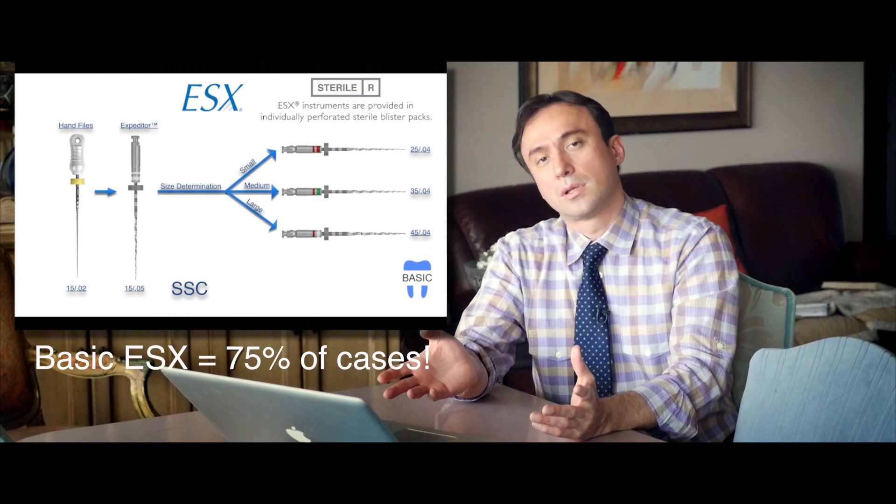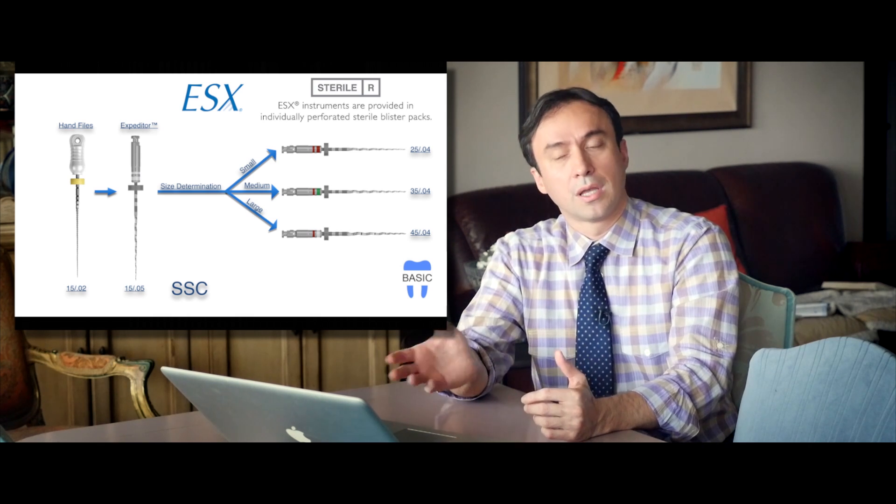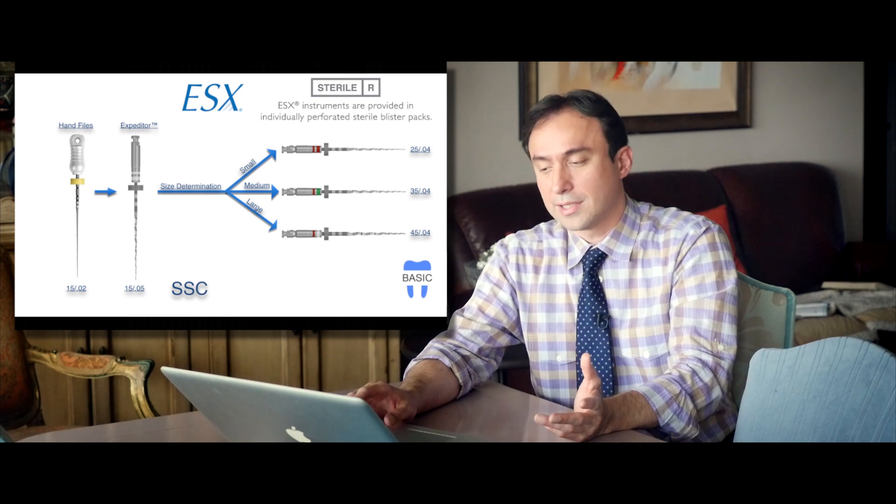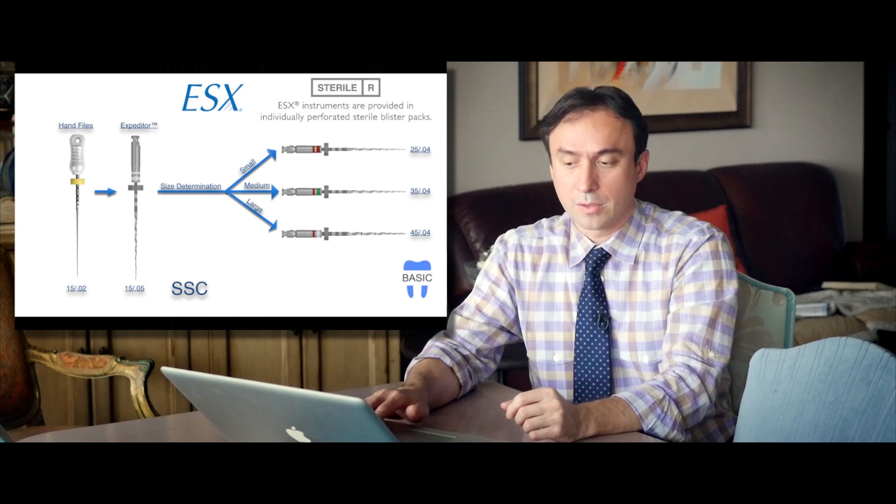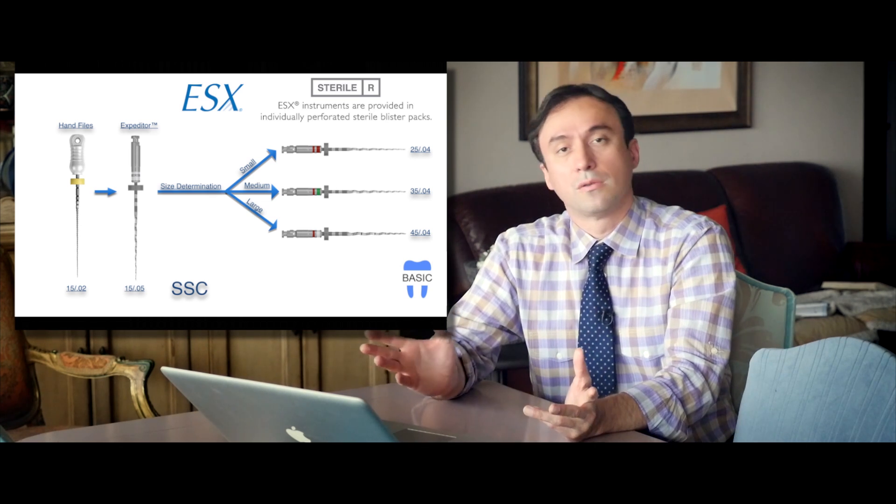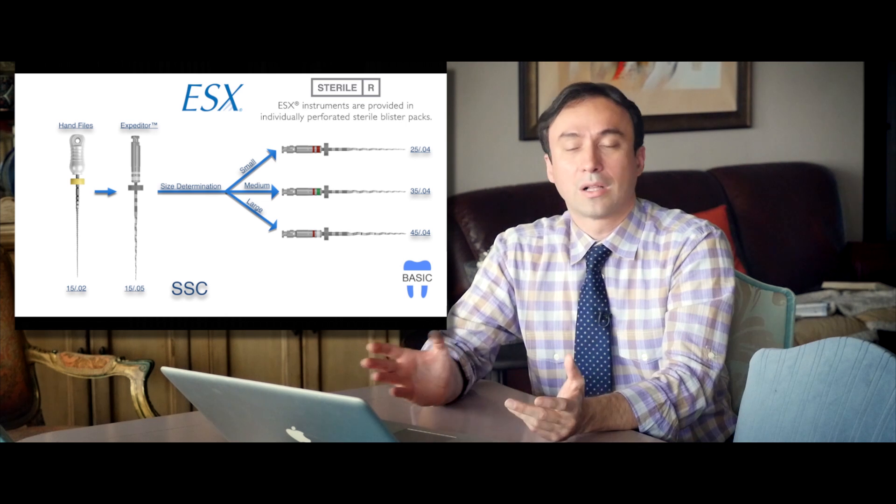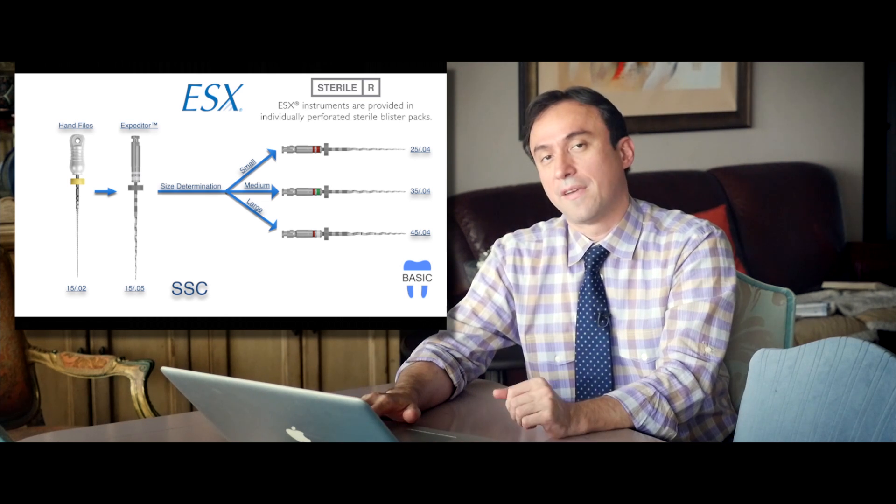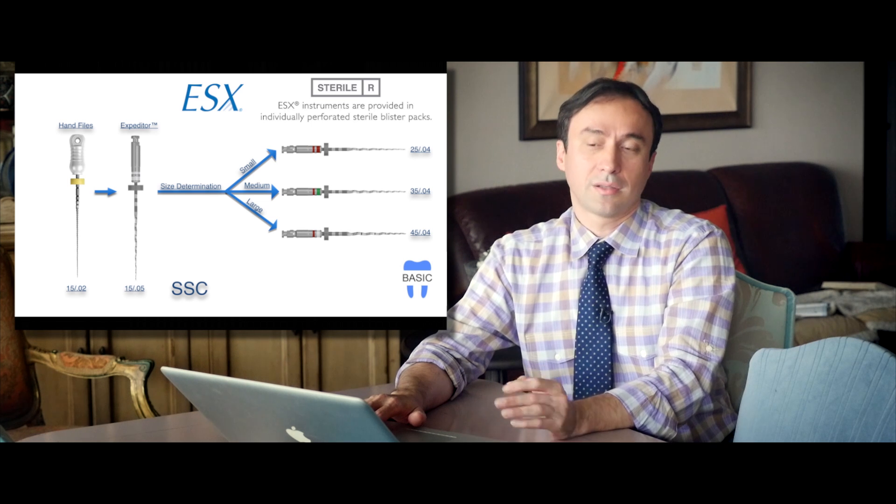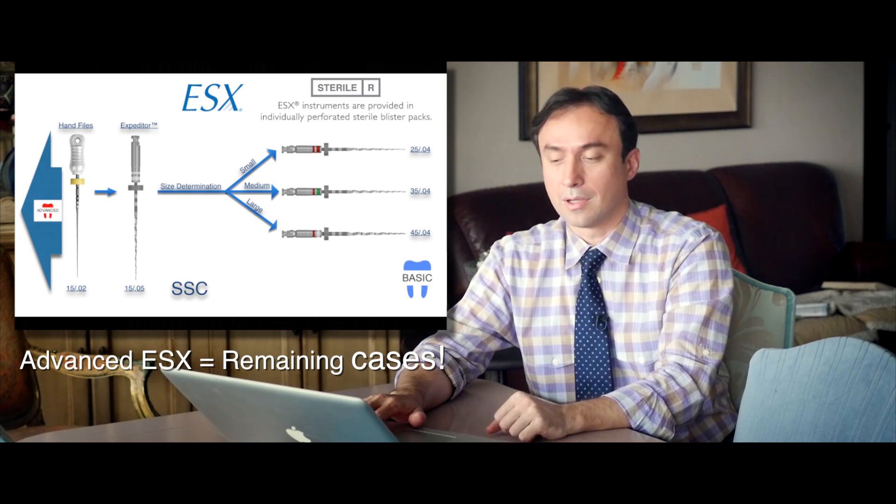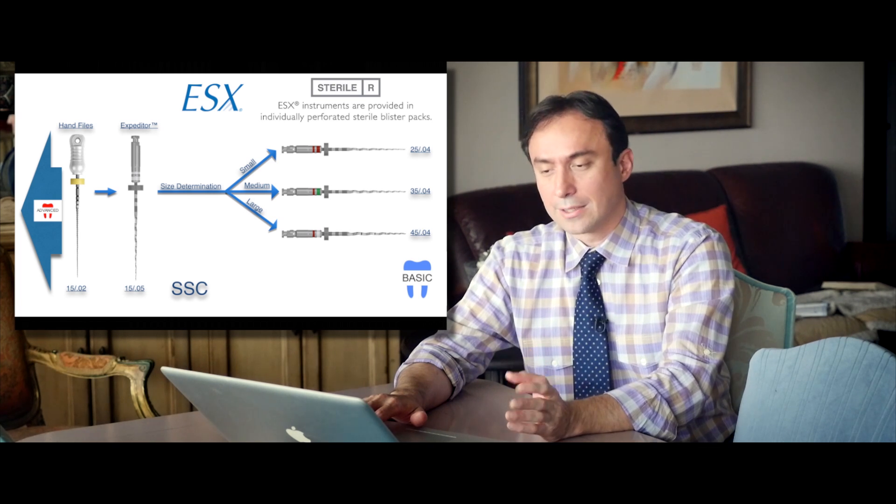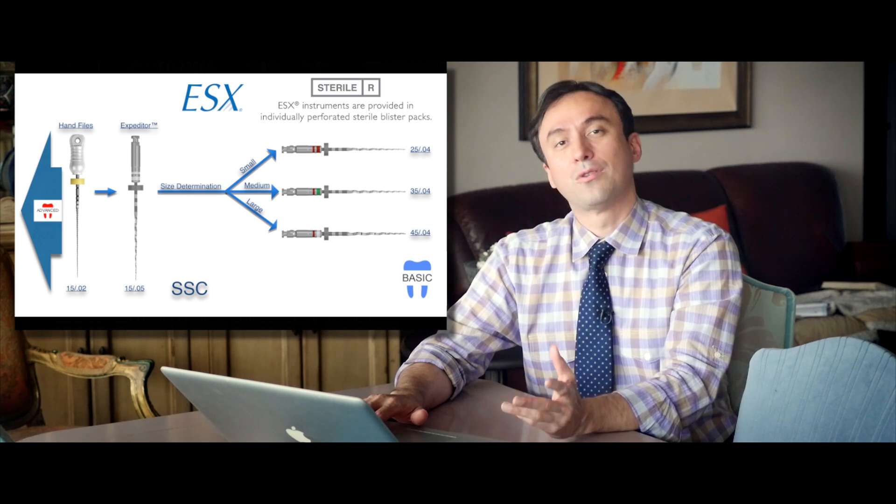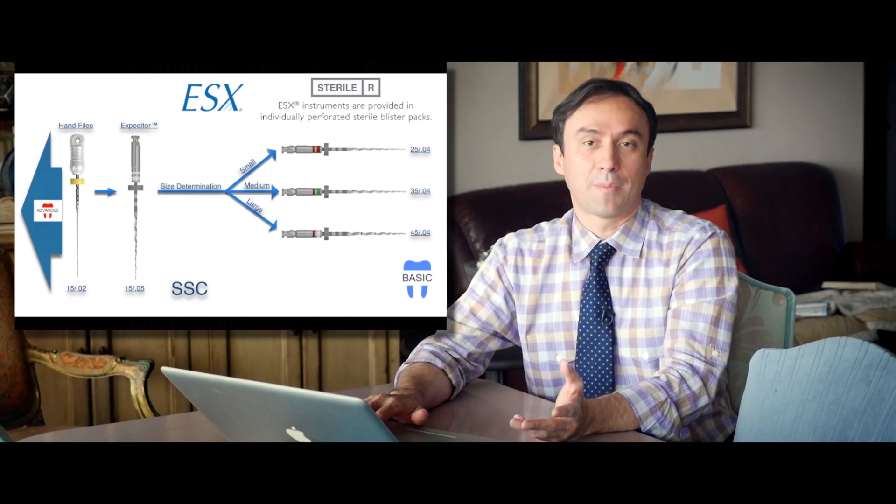But some of the more difficult molars and premolars will require some additional help. We're very realistic about that, and that's part of our educational mission, to do responsible education, which means to not just go out there and say all you need to do is two files to treat all your cases. We're all clinicians and we all understand that you are going to be facing challenges in some of the cases that require more than two files. And that's the subject of this tutorial where we're going to talk about the advanced protocol using the ESX files, in those cases where you're going to have a tough time getting your 1502 hand file down to the apex before you use your expediter file. So what do you do in those cases?